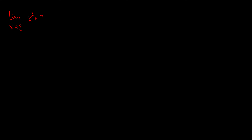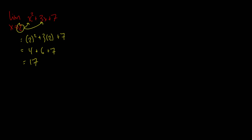Here's a practice problem: find the limit as x approaches 2 of x squared plus 3x plus 7. Try it yourself, then check the answer. Since this function is defined at x equals 2, we simply plug in: 2 squared plus 3 times 2 plus 7 equals 4 plus 6 plus 7, which equals 17. If you graph this and look at the point x equals 2, the y-value is 17.